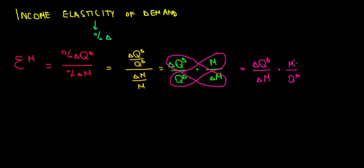How do we interpret this? We interpret this as: if income increases by 1%, how does quantity demanded change? I'm going to put both directions, and we're going to discuss why quantity demanded can change in both directions.